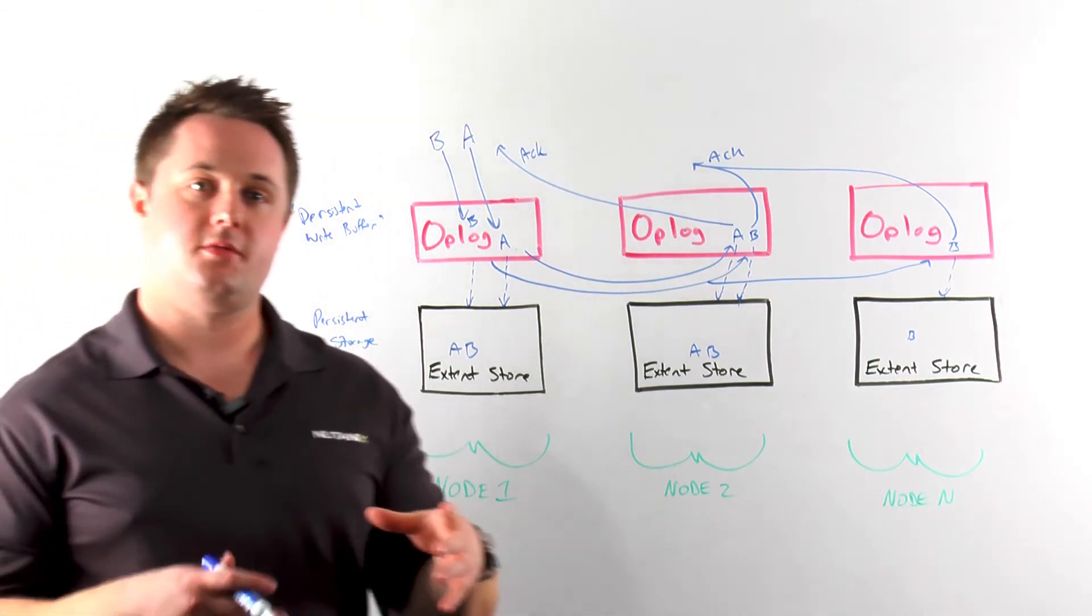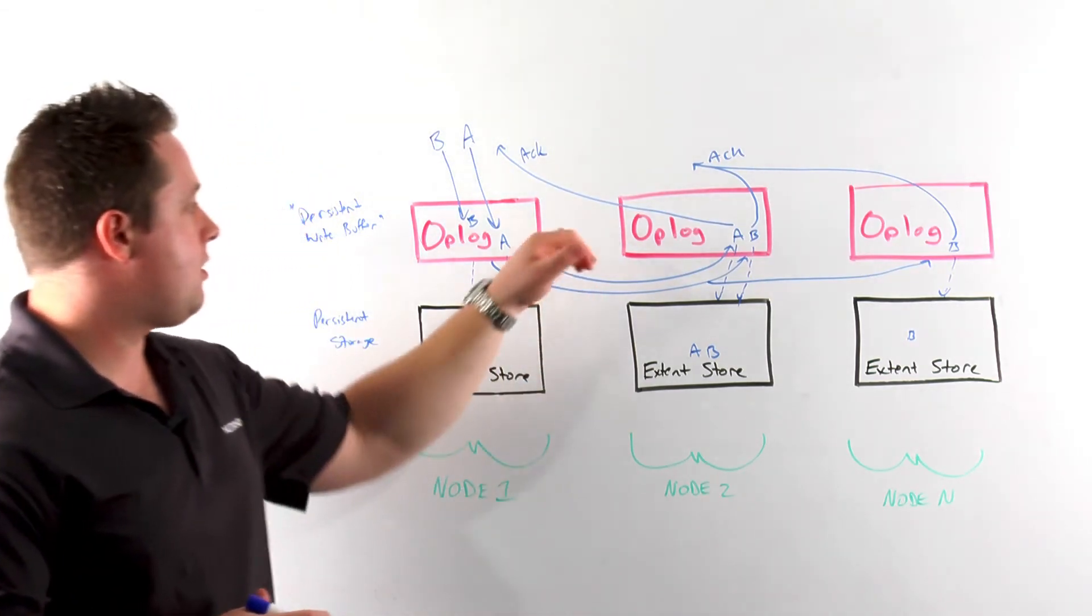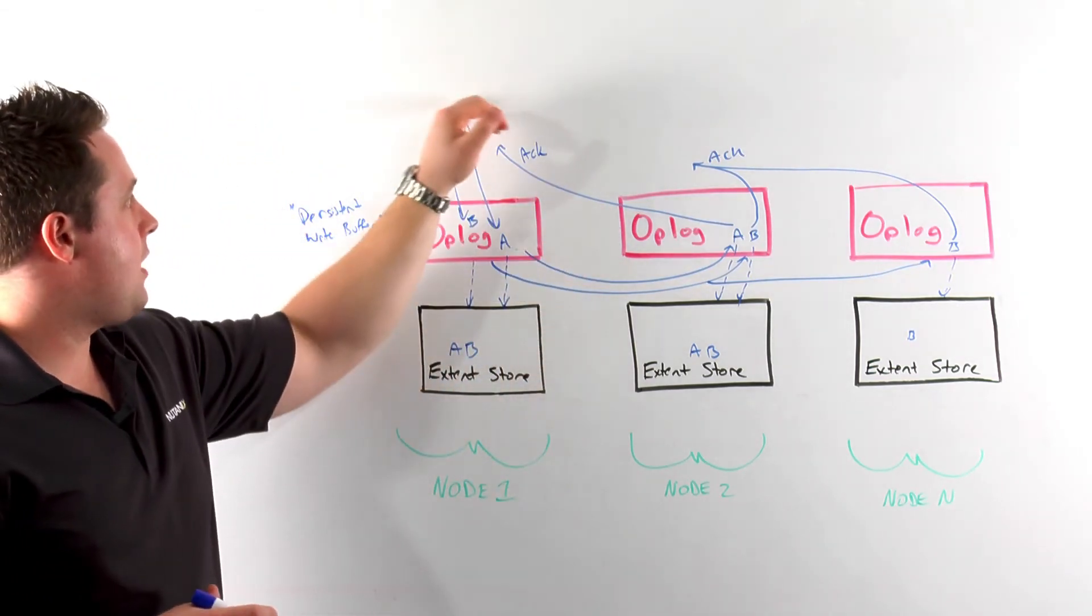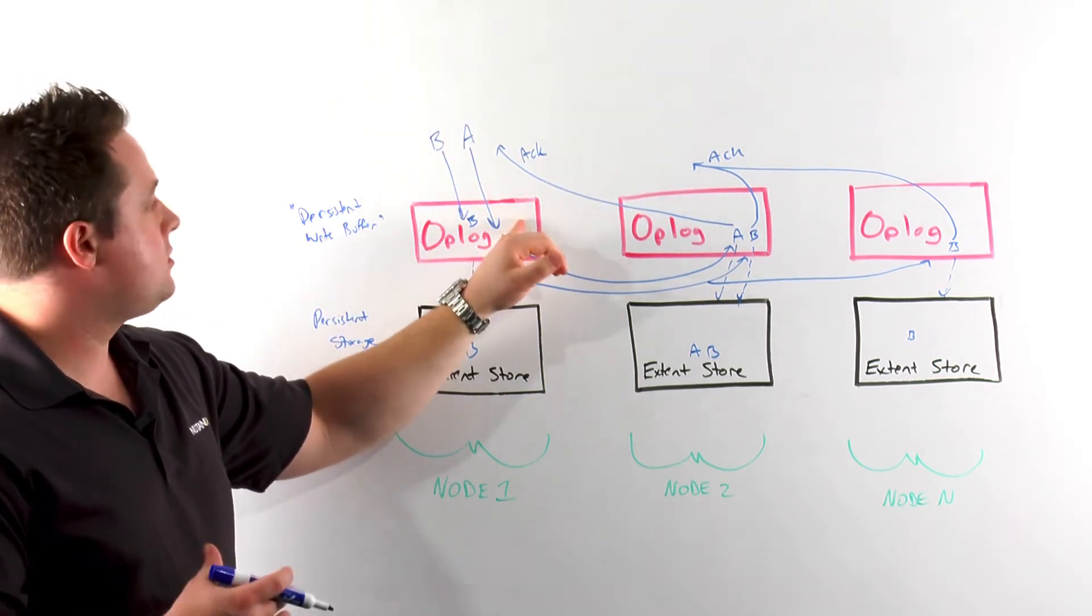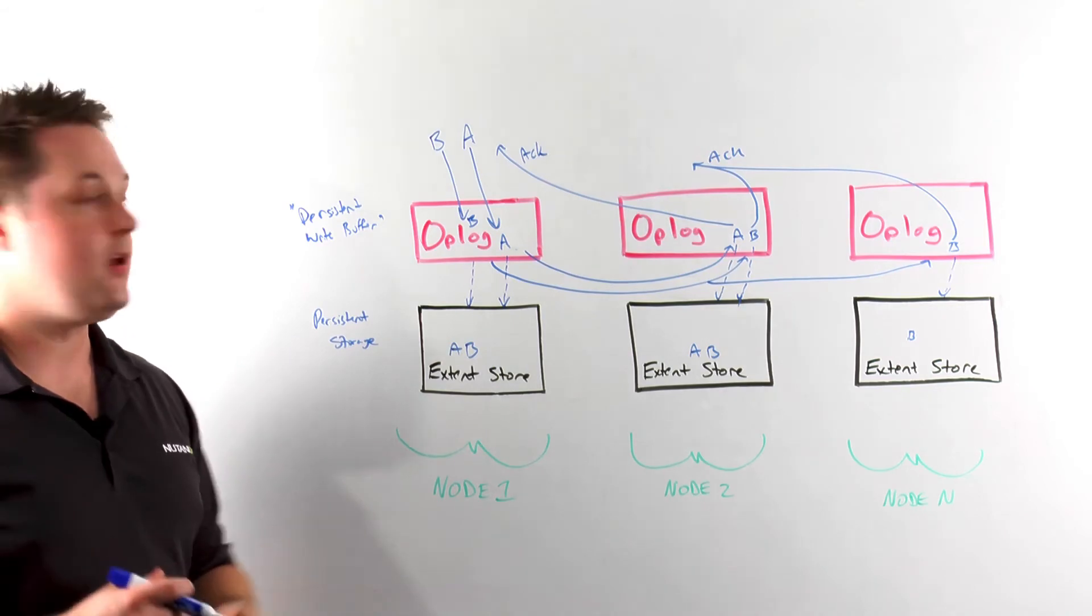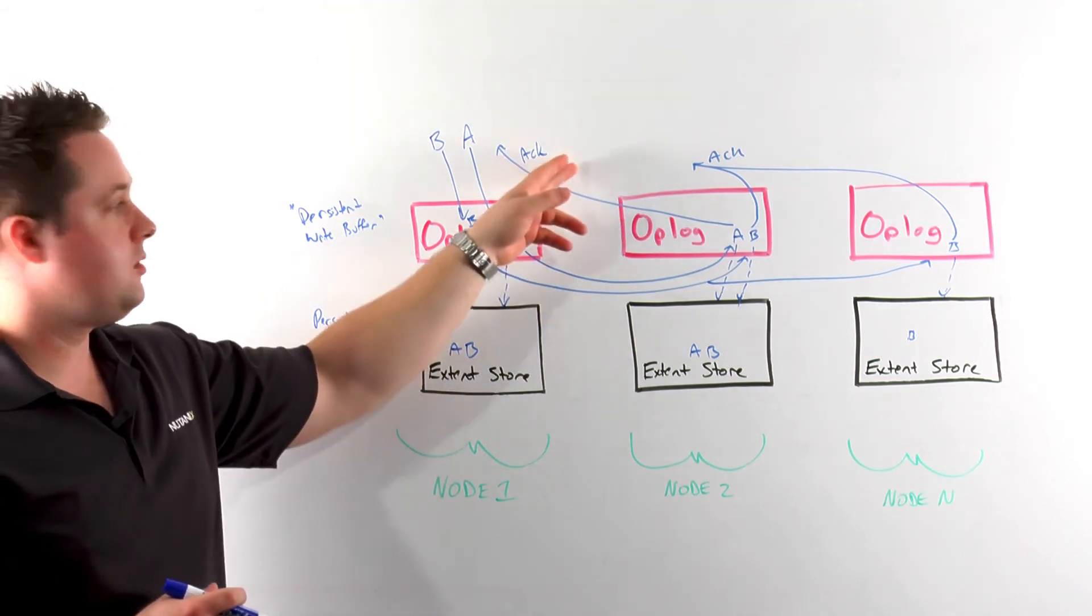Another one of the key things in terms of data protection is ensuring data quality. In this example where I write both A and B, when the write actually occurs, I take a checksum of that data. That checksum is then stored in the metadata.